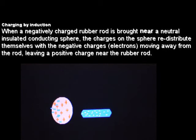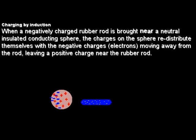Charging by induction: When a negatively charged rubber rod is brought near a neutral insulated conducting sphere, the charges on the sphere redistribute themselves. The negative charges or the electrons move away from the rod to the other side, leaving a positive charge near the rubber rod.